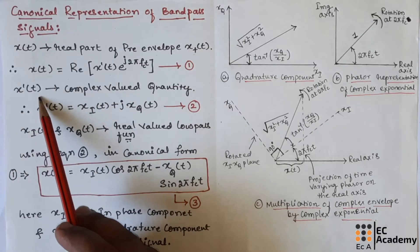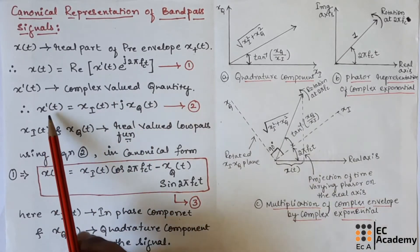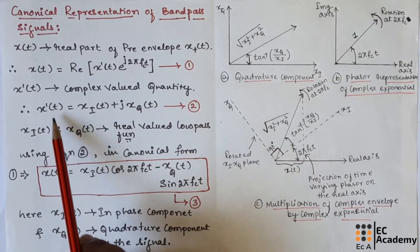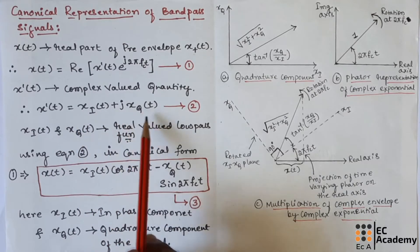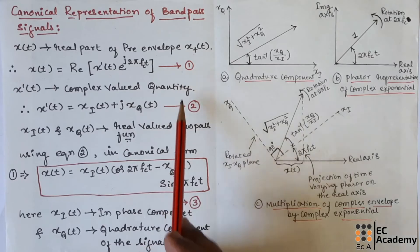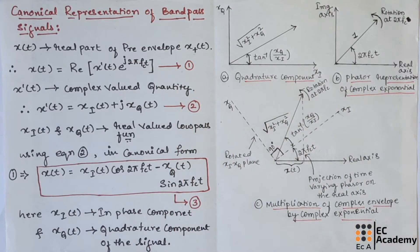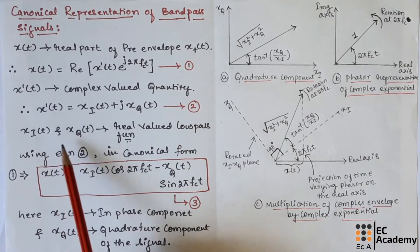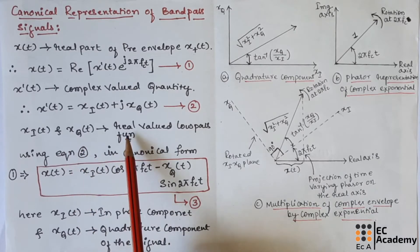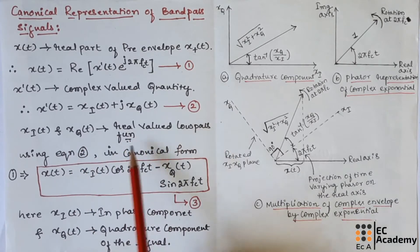Here x̃(t) is a complex valued quantity. We can represent x̃(t) as xI(t) plus j·xQ(t). Let us call this as equation number 1, and this as equation number 2. Here xI(t) and xQ(t) are real valued low pass functions.